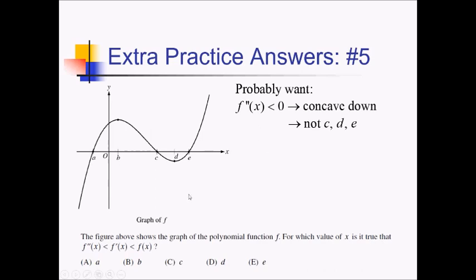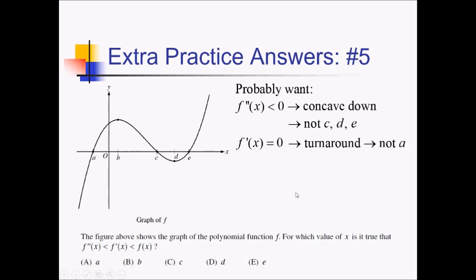If f prime is kind of in between, that means f prime is probably going to be 0, which means you have probably some kind of smooth turnaround for the graph of f. In fact, if f double prime is negative and f prime is 0, you definitely have some kind of extrema — and if f double prime is negative, that means you should have a max. Looking at A versus B: A is not any kind of extrema, so we can eliminate that one. We're down to B. If f of x is greater than 0, we should be above the x-axis. Looking at B, this point is above the x-axis. So that completely confirms that we are looking for choice B.